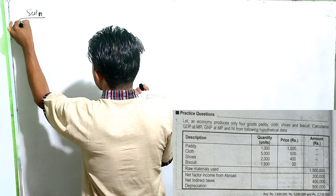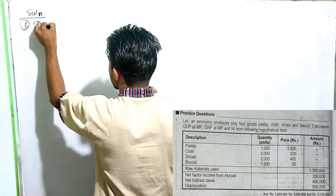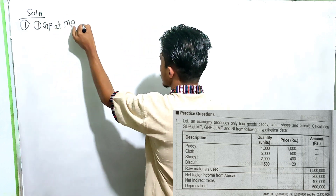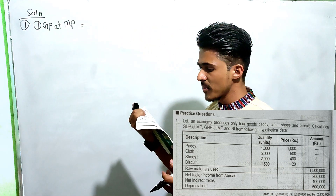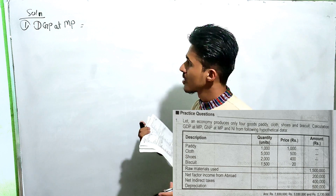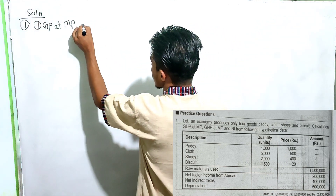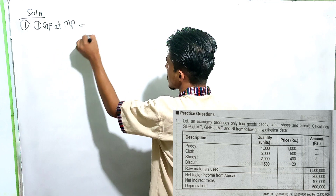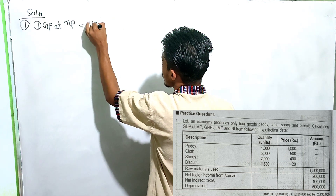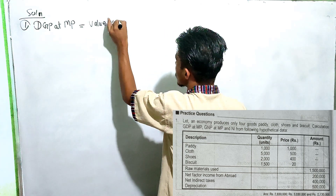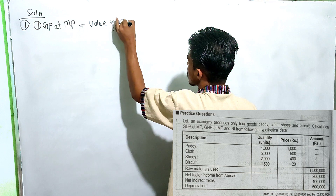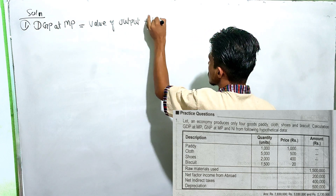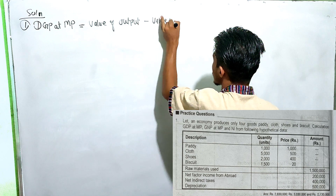I am going to use GDP at MP. What is the formula for the production method? The value-added method. What is the value of output in the value-added method?